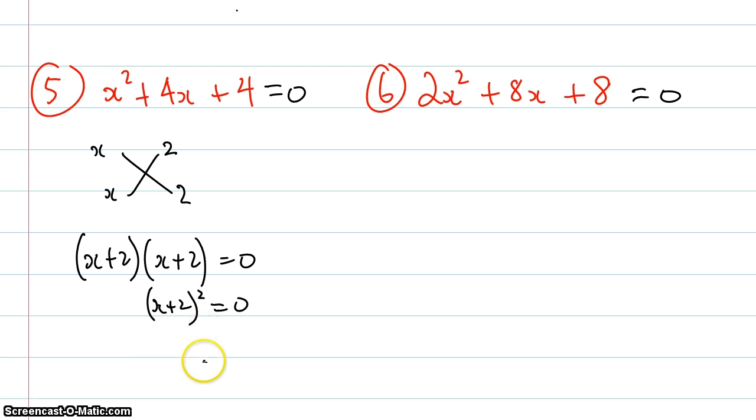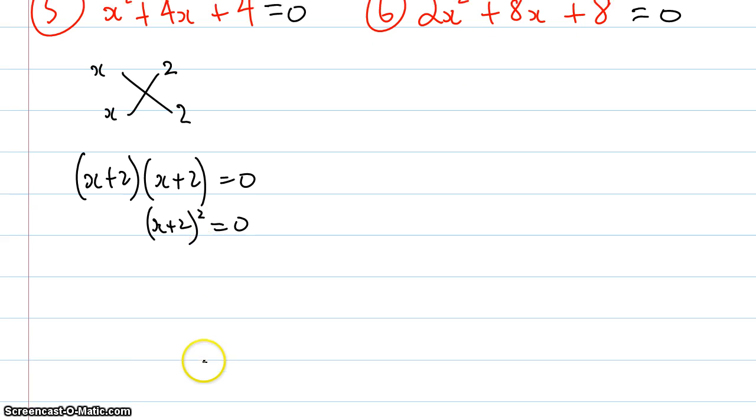So in this case I'm only going to get one answer, or I guess you can get the same answer twice, x equals negative 2 and x equals negative 2, but we don't need to have the two different answers we just need to write it once.